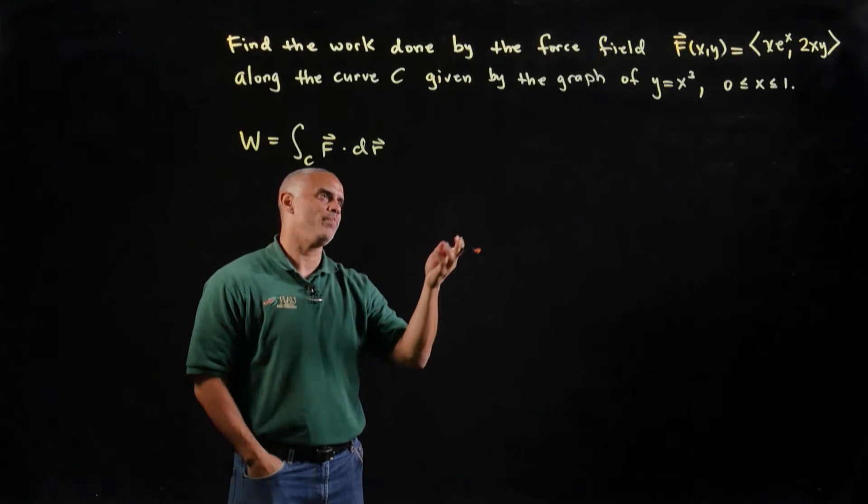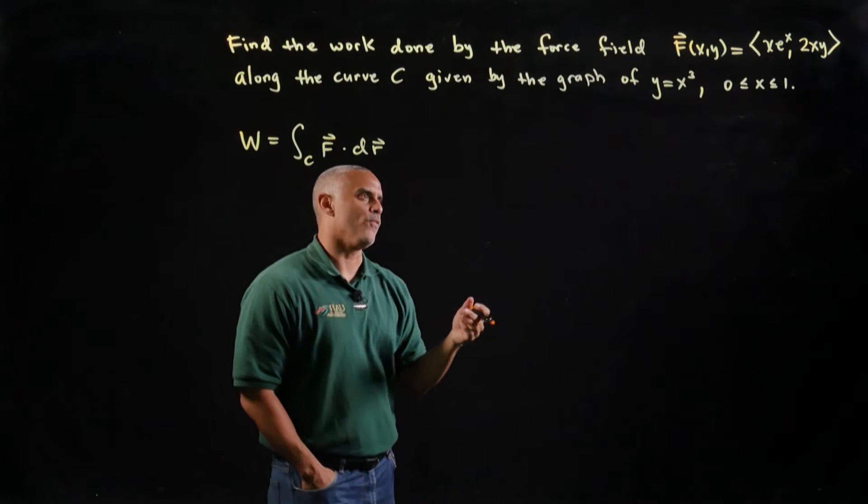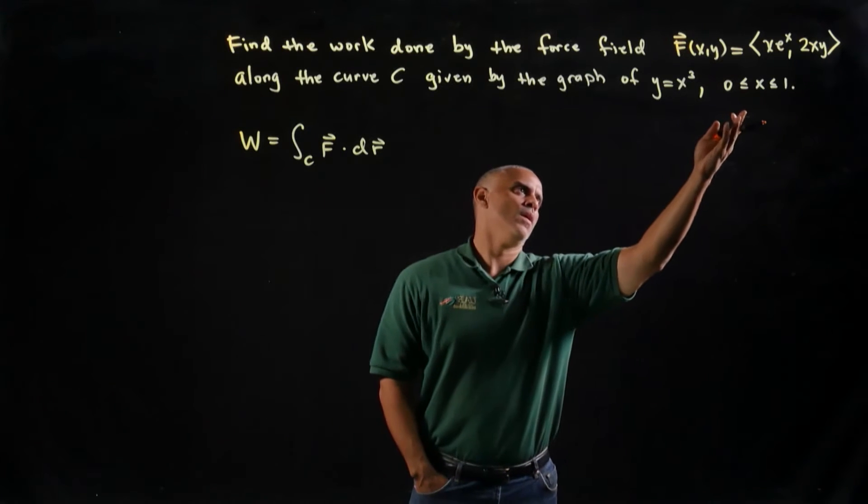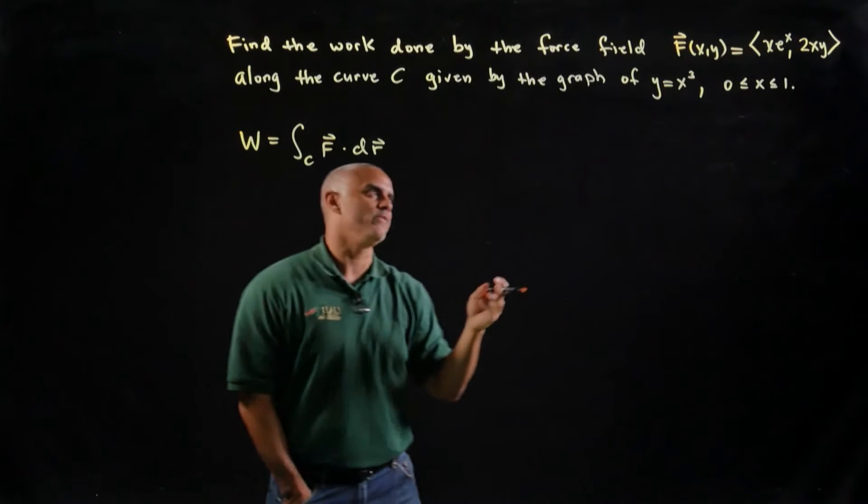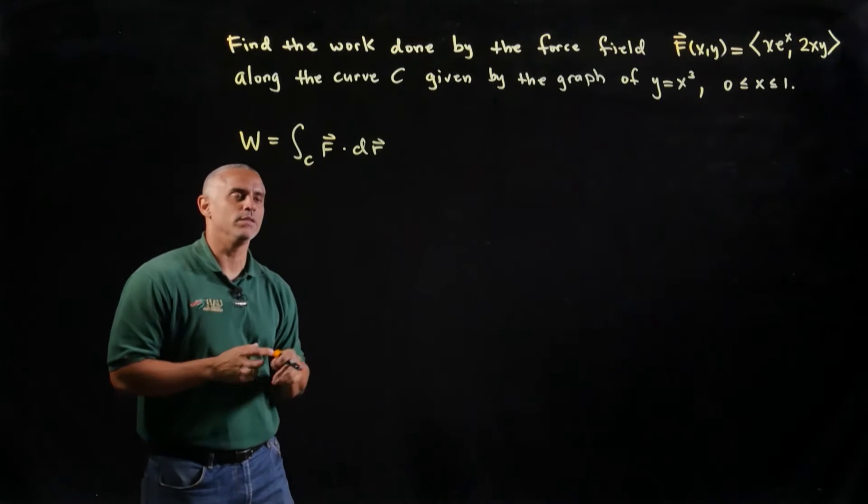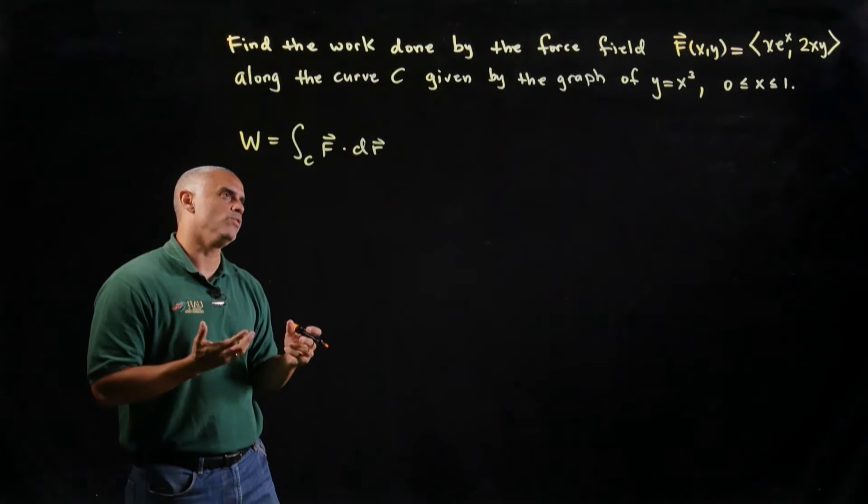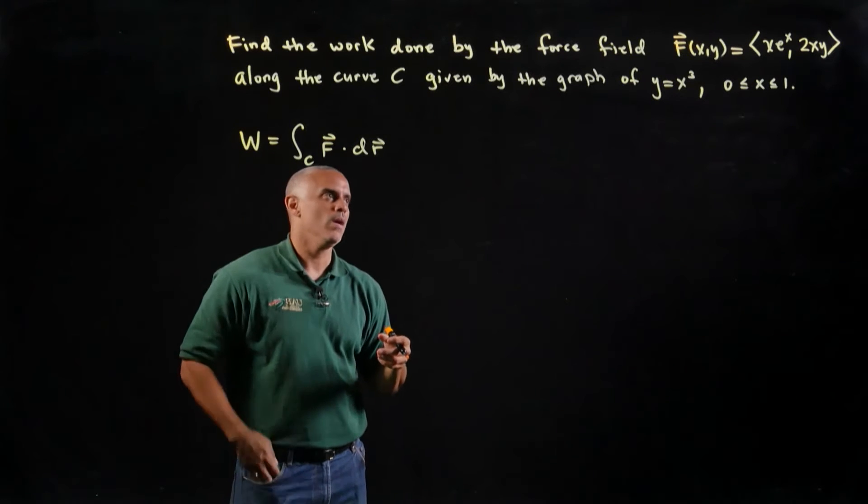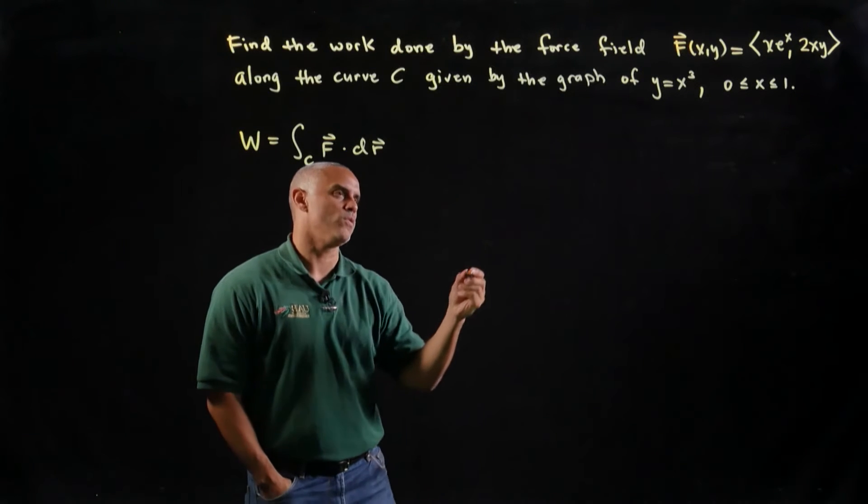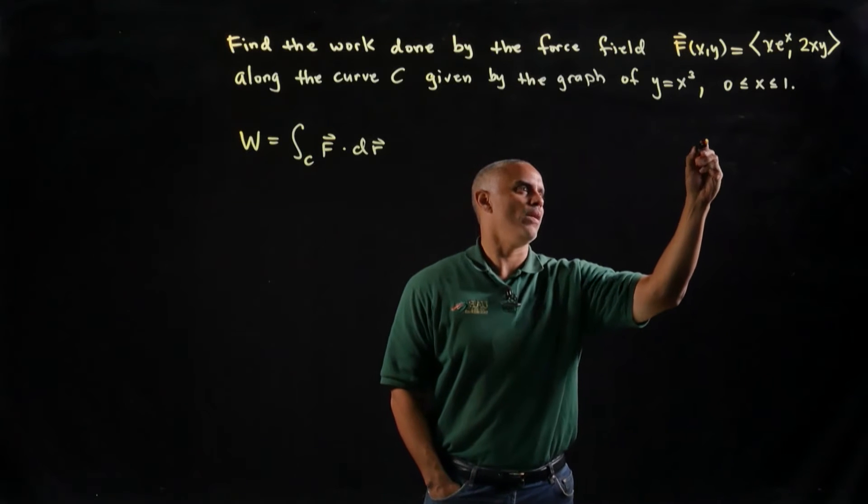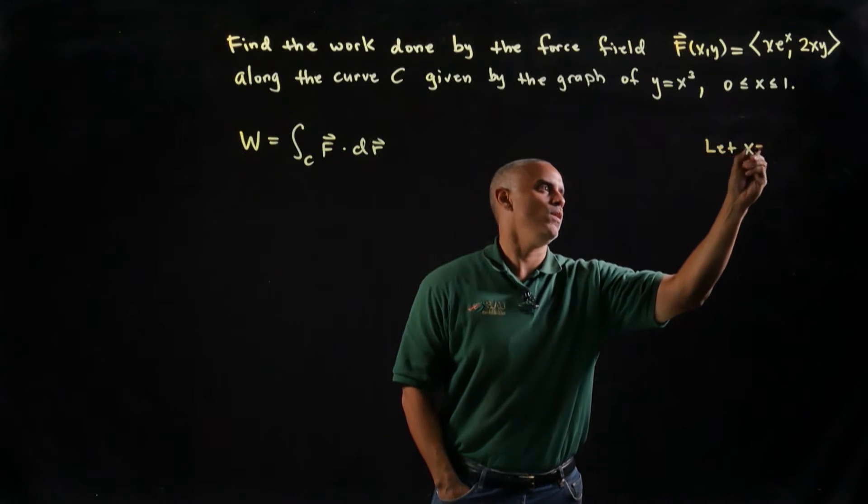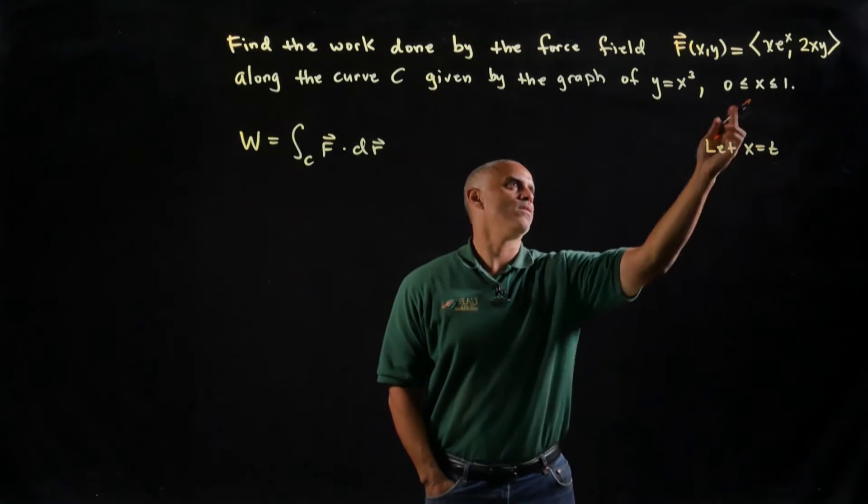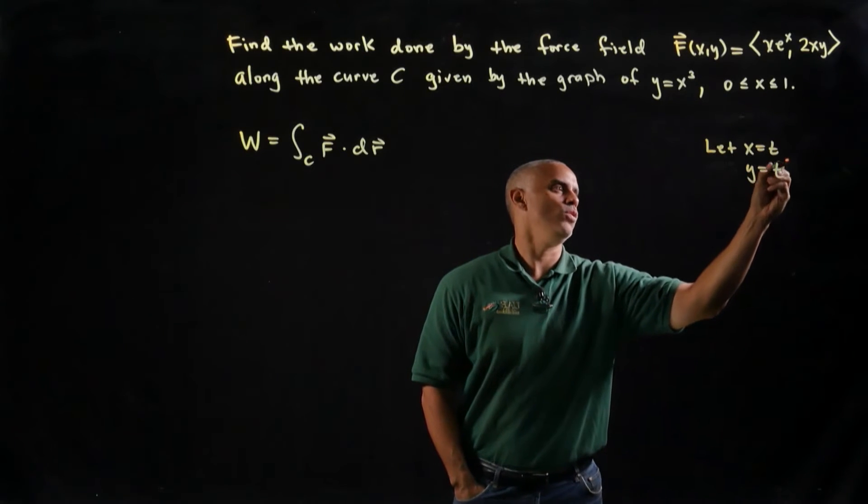And so here, the natural parameter to use really is x, but I'll just go ahead and write everything in terms of time because typically when we parameterize, we'd like to know how things, maybe a position changes in time or how this work plays out in time. So on the side here, I'll just write, let's let x equal to t, and if x is t, then y becomes t cubed.